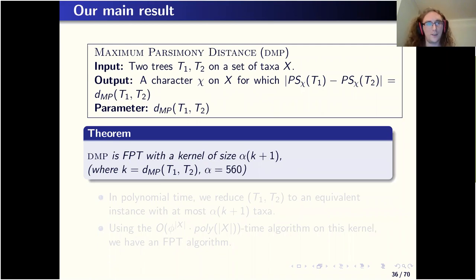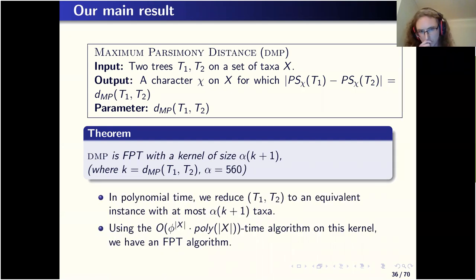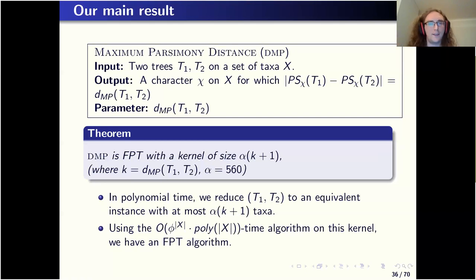More formally, our main result says: for the parameterized problem of maximum parsimony distance — given two trees, find a character for which the difference in parsimony scores equals the DMP, with DMP as the parameter — the problem is fixed parameter tractable. The main thing we show is that it has a kernel of linear size: specifically, we can reduce any pair of trees to an equivalent pair on at most alpha times K plus one taxa, where K is their distance and alpha is the constant 560. Combining that with the previous exact algorithm shows it's also fixed parameter tractable.